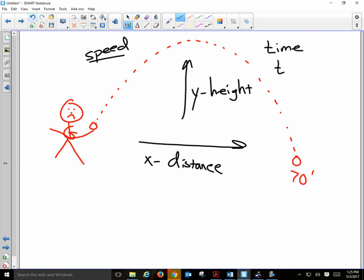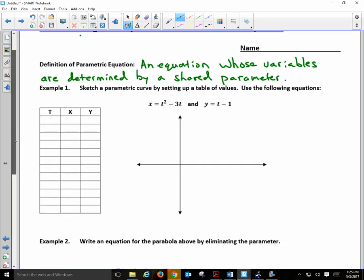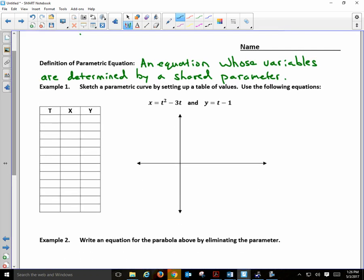So the variable is T. And so we can write a function for X in terms of time and write a function for Y in terms of time. Because time is changing, right? As time goes by, the shot goes farther. As time goes by, the shot may increase in height. It may decrease in height depending on what time it is. And so therefore, you can see that we have a nice example here where we have an equation, a parametric equation, where we have X is equal to T squared minus 3T and then Y is equal to T minus 1.